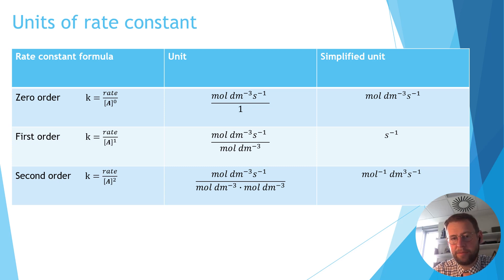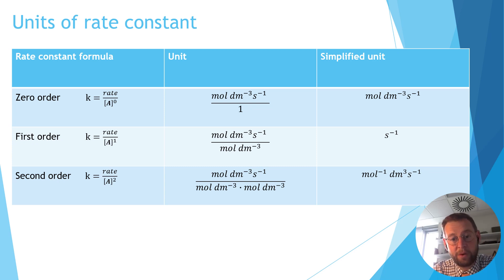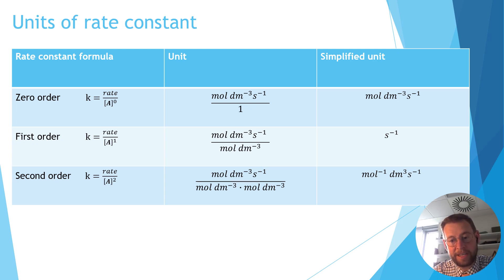For a second order reaction, the rate constant K equals the rate divided by the concentration of A squared. On the top line of the unit we have moles per decimeter cubed per second, divided by two sets of the unit for concentration — moles per decimeter cubed multiplied by moles per decimeter cubed. One moles per decimeter cubed cancels from top and bottom, leaving seconds to the minus one on the numerator and moles per decimeter cubed on the denominator. So the units become moles to the minus one, decimeters cubed, seconds to the minus one.